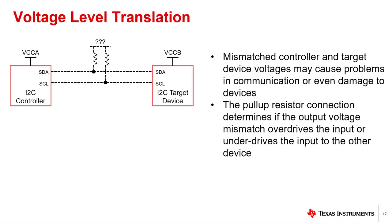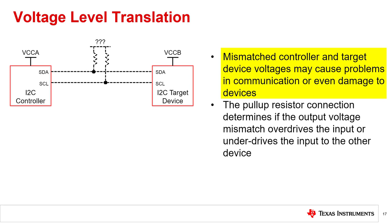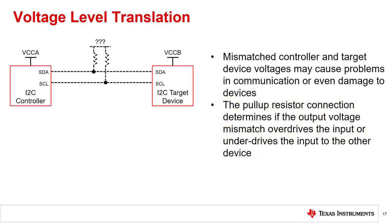Larger systems may have multiple power sources with multiple voltages. These different voltages may power different I2C controllers and target devices. We'll talk about voltage level translation and how these different I2C voltages may or may not interact. One common problem with designing large systems is the mixing of different voltage levels within the system. For example, what happens when the controller and the target device do not run on the same voltage?